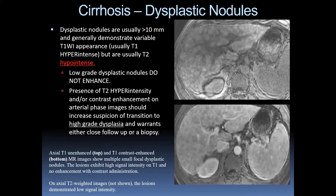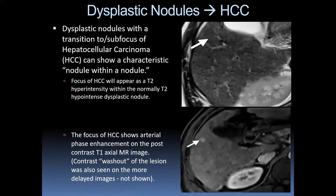Multiple small focal dysplastic nodules appear bright on T1 with low signal intensity on T2 and no associated enhancement. Dysplastic nodules transitioning to HCC can show a characteristic nodule-within-nodule appearance — the focus of hepatocellular carcinoma appears T2 bright within the normally T2-dark dysplastic nodule, and shows arterial phase enhancement on post-contrast T1 weighted imaging. Contrast washout of the lesion is also seen on more delayed images.